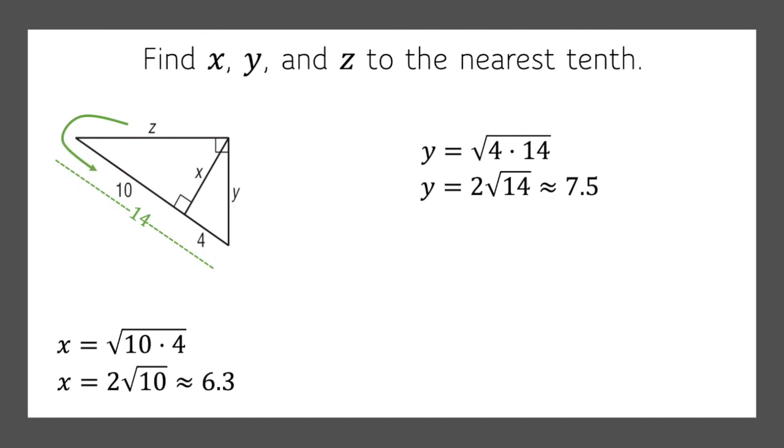And to find Z, let's round the corner, we'll run into 10. So 10 times 14, it's about 140. 140 breaks up into 4 times 35. So we've got 2 root 35 is approximately 11.8.